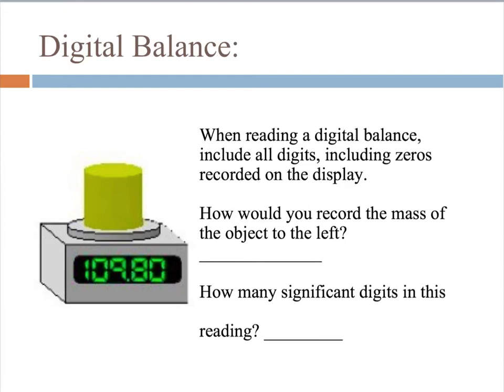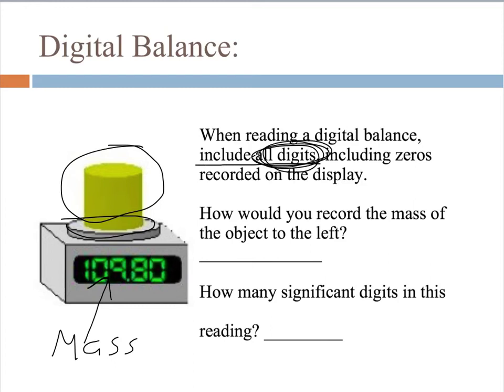For balances, the fortunate thing for you this year is that we're going to use electronic balances. Basically, that's a balance where you put the object on the balance pan and then read out a display. A digital display gives you the mass. Quite simply, when you read a digital balance, you must include all digits, all digits, including zeros that are on the display. So this mass, how would you record it? Quite simply, 109.80. And that zero is important. You must include that final zero. That's the computer's way, the computer being the balance. It's its computer's way of estimating. That's its estimated digit. So any digits on that display, you must record. How many significant digits here? Well, we have five. The one, the zero, the nine, the eight, and that last zero. Five significant digits.